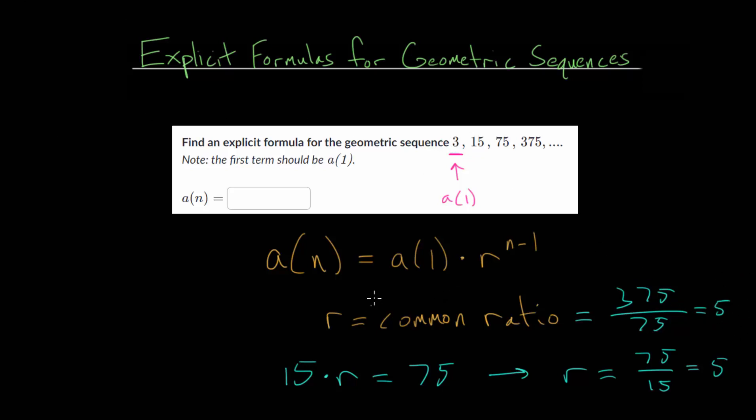So now that we know our common ratio and we know the first term, let's just match it up to our general formula. So for us, we have a of n is equal to that first term, which is 3. And then we're going to multiply by the common ratio, which is 5, and we'll raise that to the n minus 1 power. So this should be our final answer that we're going to put in the box.